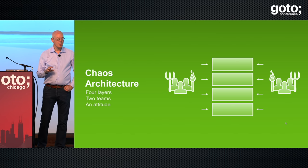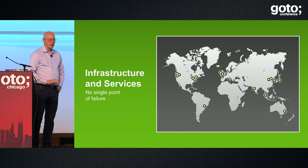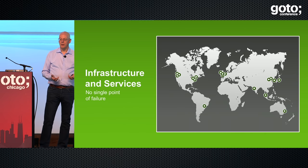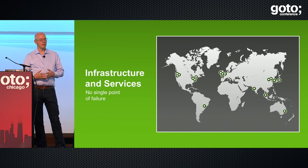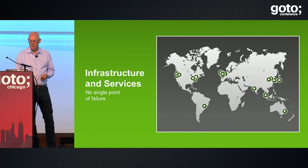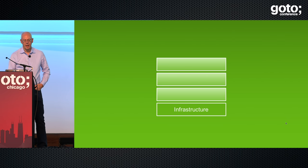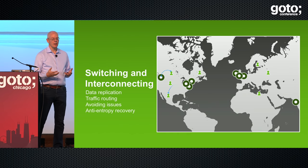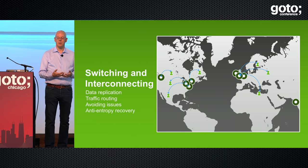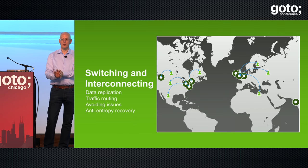Chaos architecture has four layers, two teams, and an attitude. The base layer is infrastructure and services — the building blocks. The key thing: you want more than one way to do everything and more than one place to put everything. No single point of failure. Use zones and regions. That's fairly basic. The difficult bit is the next level — how do you interconnect these things, how do you connect customers to redundant places, and how do you switch traffic?